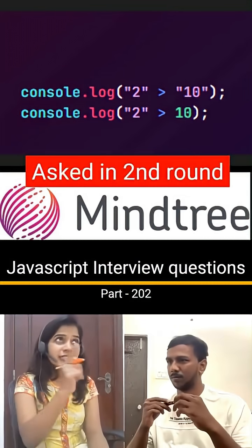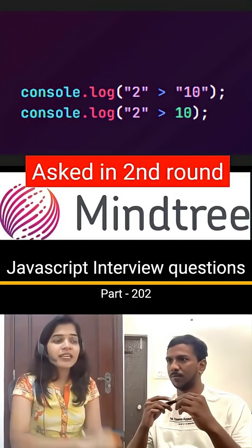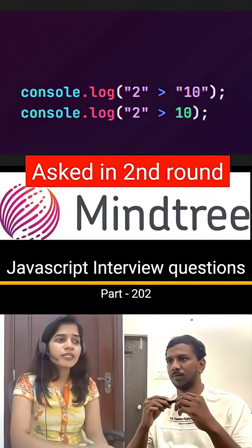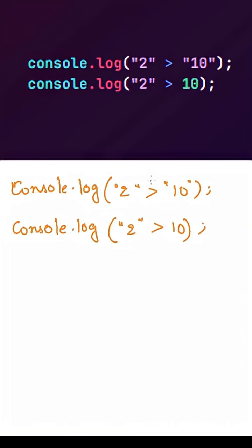Mindtree has recently asked this question in the second round of interview. Here we are using a comparison operator between two strings in JavaScript. Whenever we use a comparison operator between two strings, the JavaScript engine will not convert this into numbers.